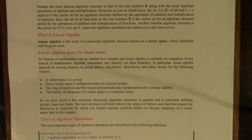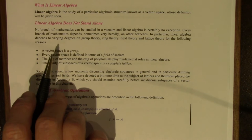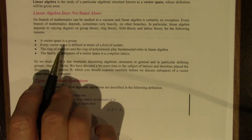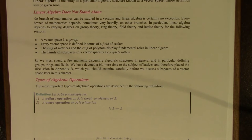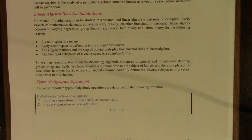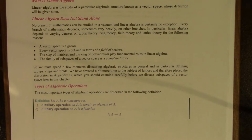The reason is: a vector space is in fact a group. Every vector space is defined in terms of a field of scalars. The ring of matrices and the ring of polynomials play fundamental roles in linear algebra — you may be familiar, for example, with the characteristic polynomial of a matrix; there's also the minimal polynomial of a matrix. The family of subspaces of a vector space is a complete lattice. You don't need to be an expert in group theory, ring theory, field theory, and lattice theory to study linear algebra.